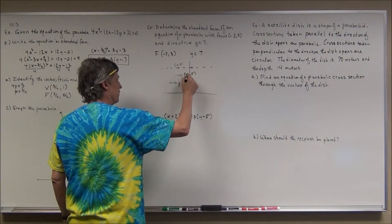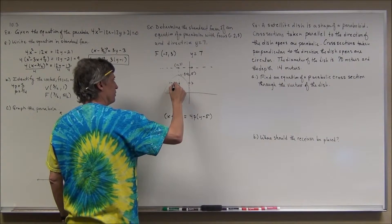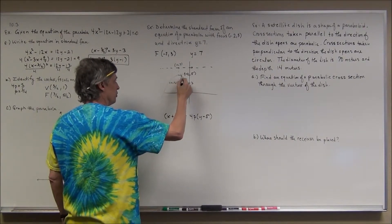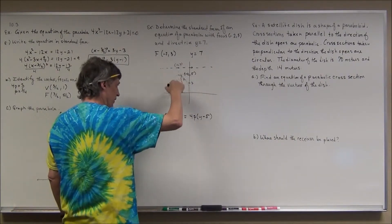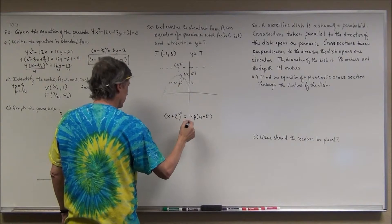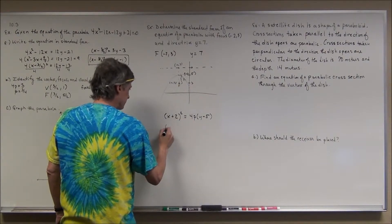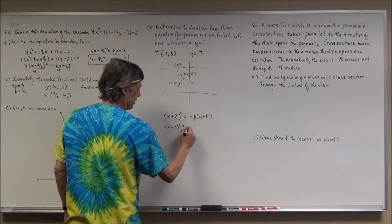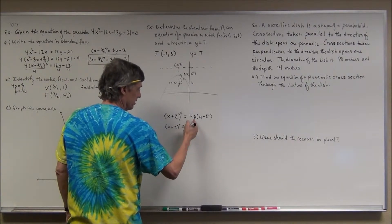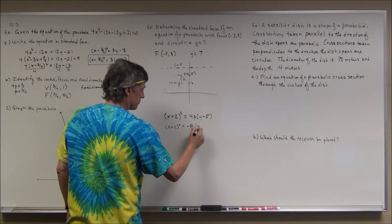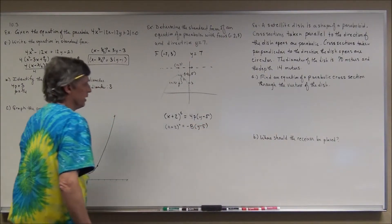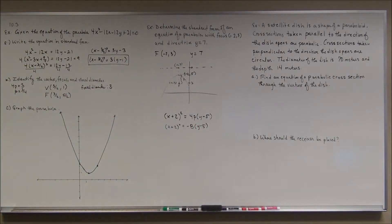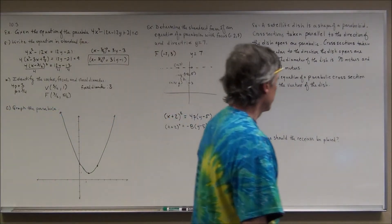The focal length is the distance from the vertex down to the focus: from (negative 2, 5) down to (negative 2, 3) is 2 units. Since it opens downward, p equals negative 2. Plugging in gives (x plus 2)² equals negative 8 times (y minus 5). That's the equation in standard form.